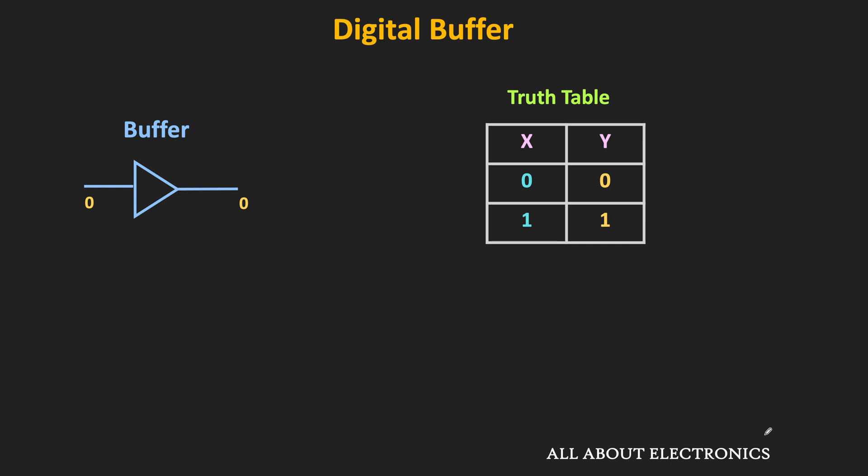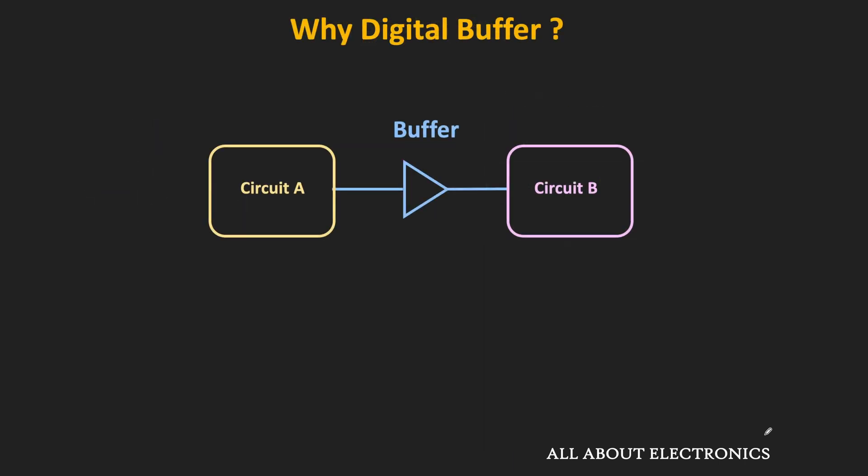The question arises: if the output of the buffer is same as the input, then what is the point of using this buffer? As its name suggests, this buffer isolates one circuit from another circuit, and yet it passes the signal from one circuit to the other. In digital circuits, when we want to connect one circuit with another that has low input impedance, or connect to a low impedance load, then this type of buffer is used.